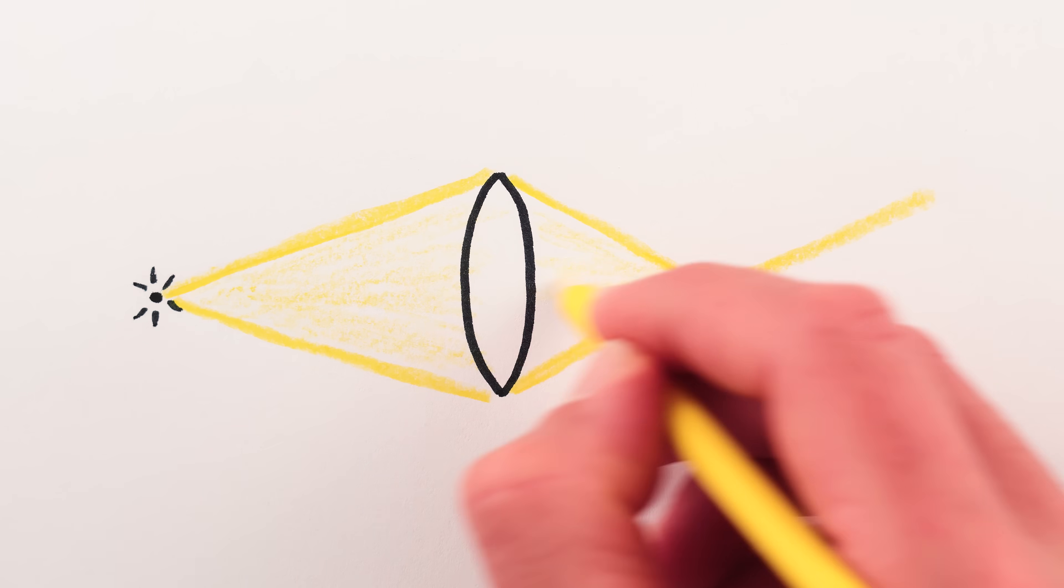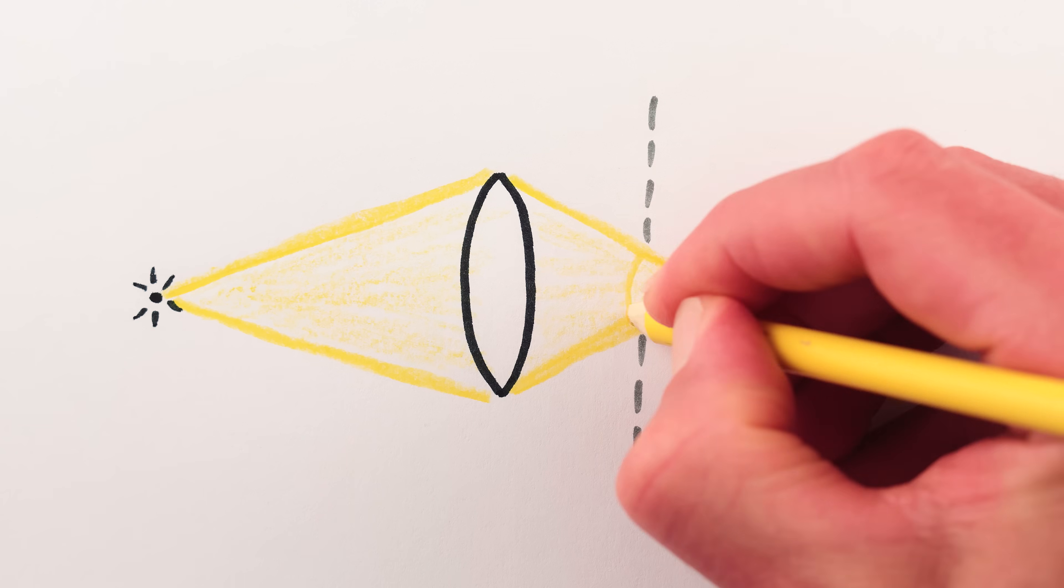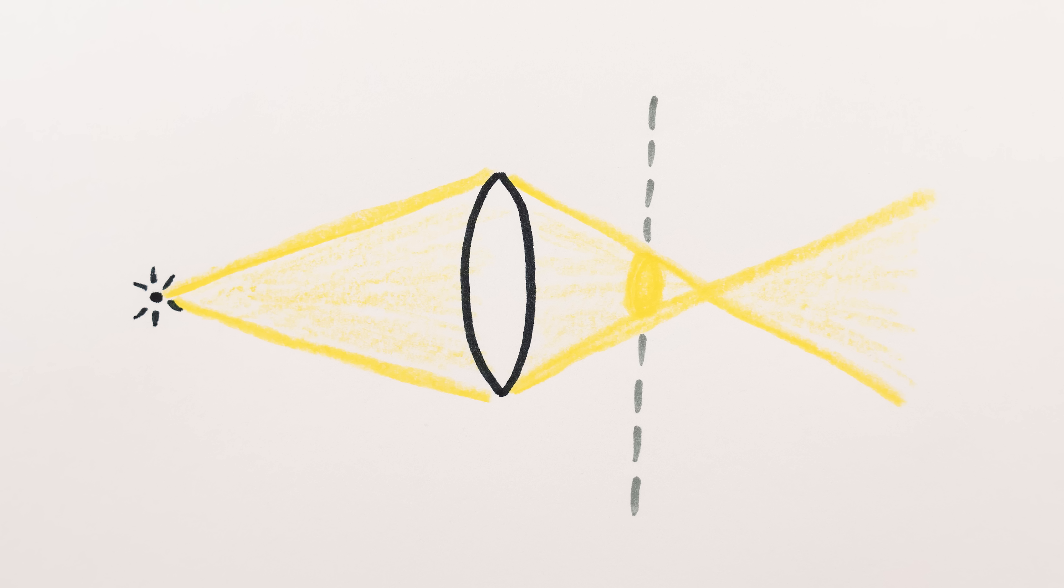The rays from a point source of light get focused by a lens down to a point and then diverge again, so if you put the image sensor or your retina just in front of or behind that point, the image of the point light source becomes spread out into a circle. This is the source of bokeh in a blurry image.